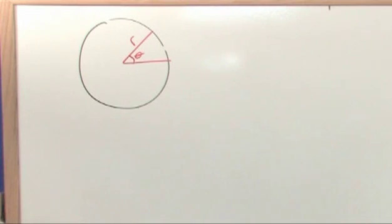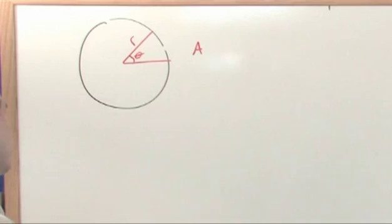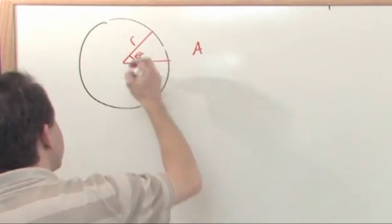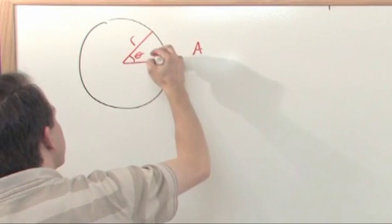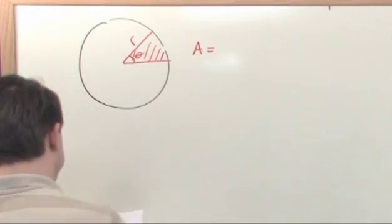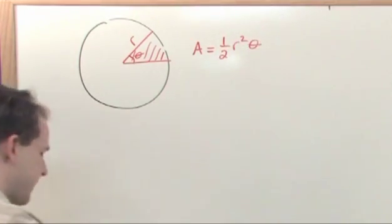So I'm going to tell you, without any proof at all, because I don't want to prove everything, and honestly, I don't think it would add much if we did prove it. The area of this shaded piece, this entire piece right here, if we were to shade it, is going to be equal to one-half r squared times theta, okay?